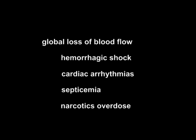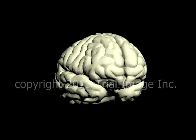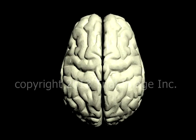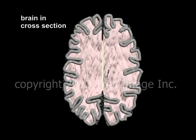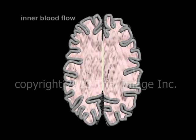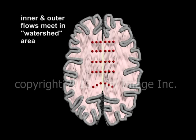The typical brain injury that occurs with a global loss of blood flow is known as a watershed stroke. To better understand how this occurs, let's take a look at the blood flow patterns in the brain. Here's a view of the brain in cross-section, looking from above. The arterial blood flow to the brain is such that there is a flow from the outer edge towards the center of each cerebral hemisphere, as well as a flow from the inner edge towards the center of each cerebral hemisphere. Where the inner and outer flows meet is known as the watershed area.